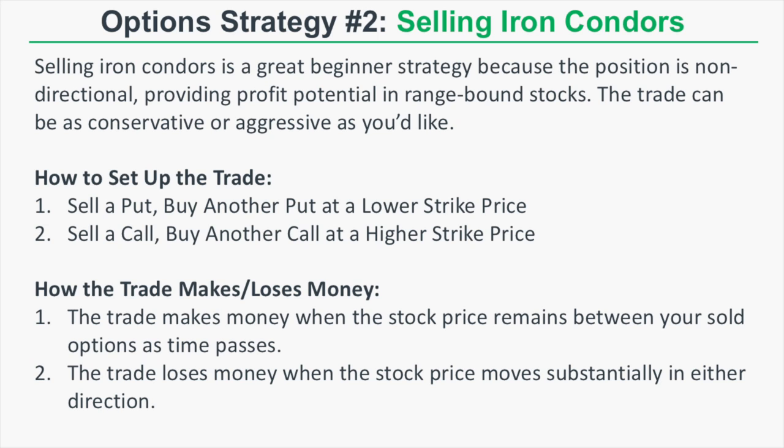Here is how you set up an iron condor trade: you're going to sell a put and buy another put at a lower strike price — that's strategy number one, selling a put spread. Then you combine that with selling a call spread, which means you sell a call and buy another call at a higher strike price than the short call. The trade makes money when the stock price remains between your sold options as time passes.